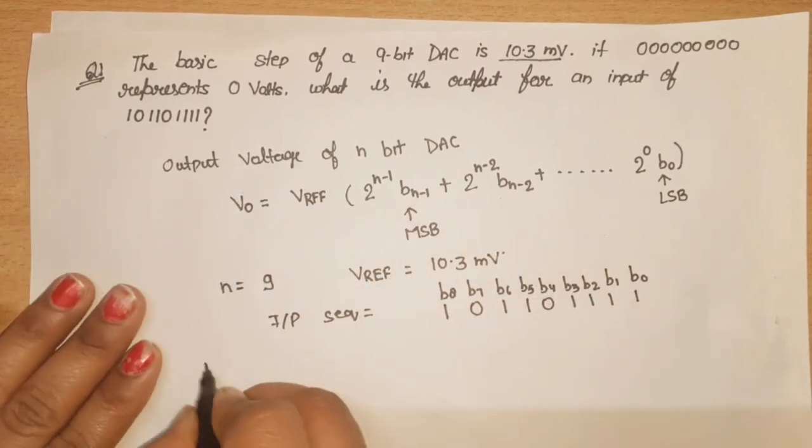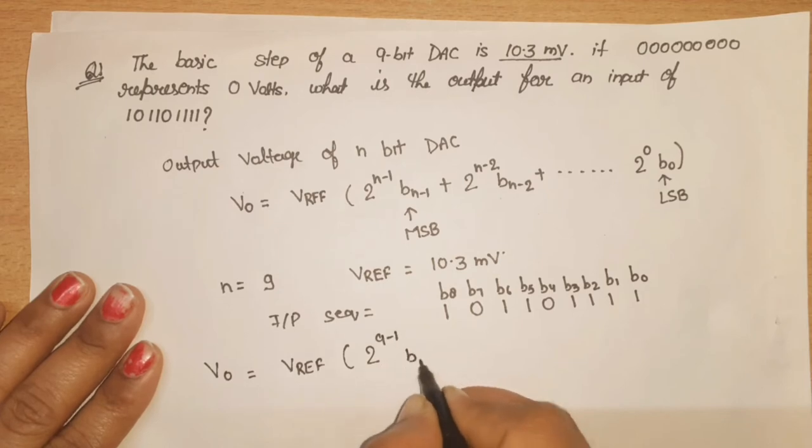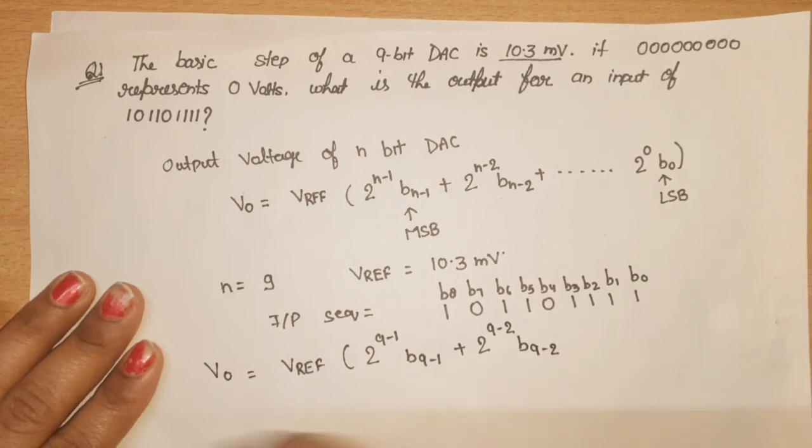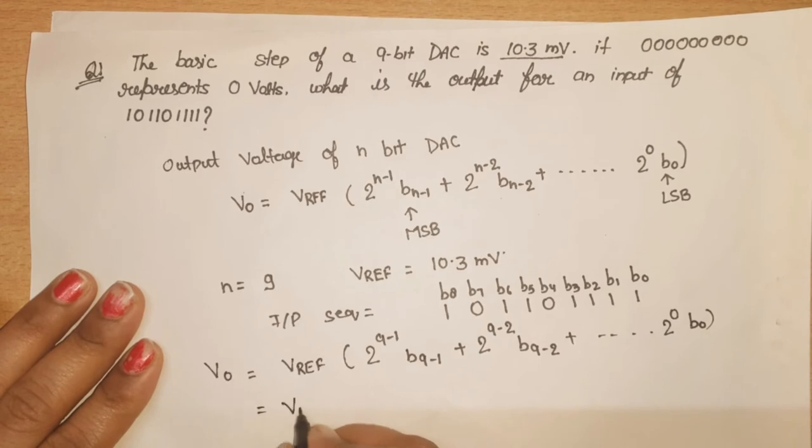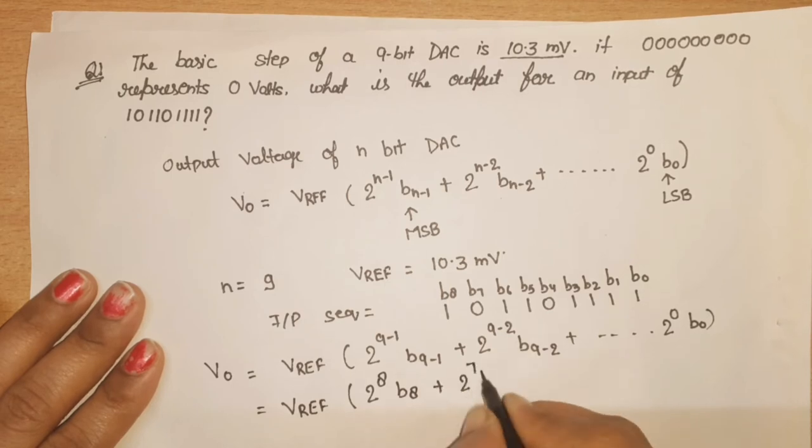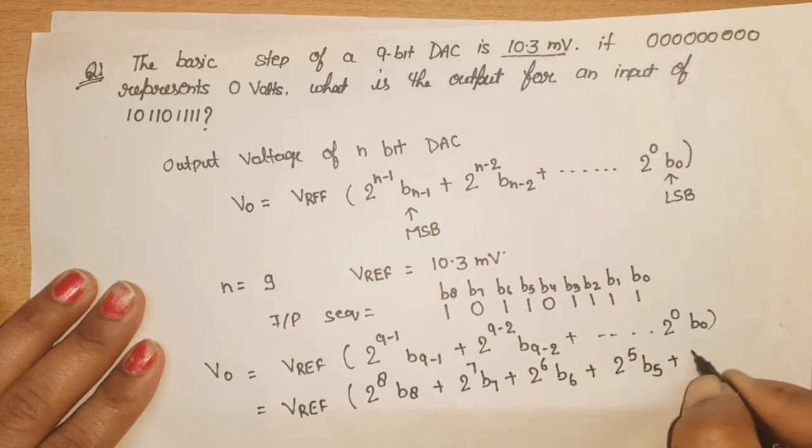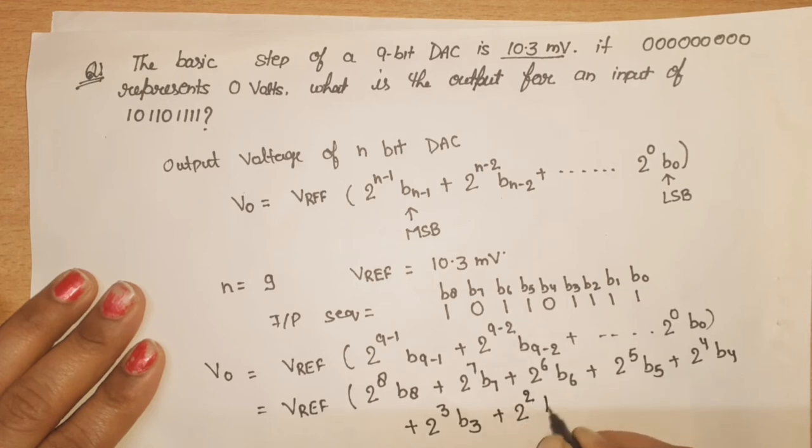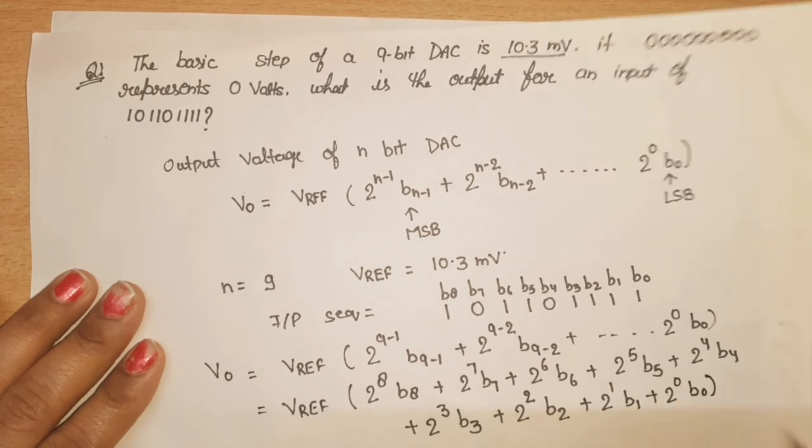Now we will keep these values here first in this formula. When n value is 9, then what will be Vout? V is equal to V reference times 2 raise to power 9-1 b 9-1, plus 2 to 9-2 b 9-2. If you want to write directly: 2 to 0 b0. Means here what happens: V reference times 2 raise to power 8 b8 plus 2 raise to power 7 b7 plus 2 raise to power 6 b6 plus 2 raise to power 5 b5 plus 2 raise to power 4 b4 plus 2 raise to power 3 b3 plus 2 raise to power 2 b2 plus 2 raise to power 1 b1 plus 2 raise to power 0 b0.